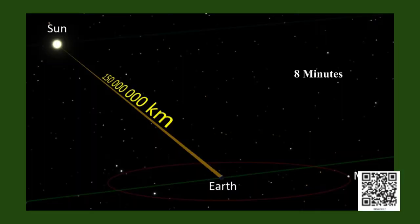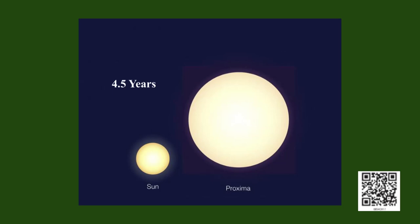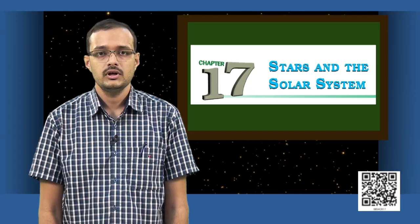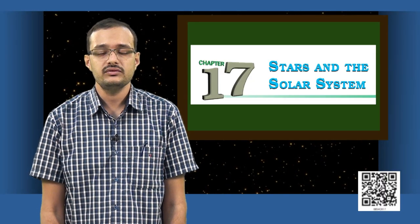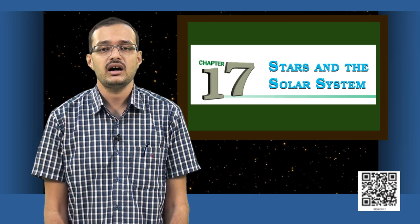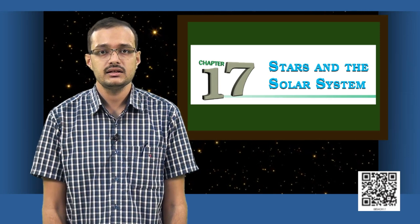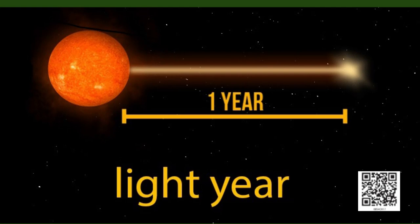To give you an idea, light takes approximately 8 minutes to travel from sun to the earth. Whereas, the next nearest star called the Proxima Centauri is so far away that light takes close to 4 and a half years to travel between that star and earth. Because of this, astronomers use a different unit to measure such large distances between the stars. They call it the light year. One light year is defined as the distance traveled by light in one year.